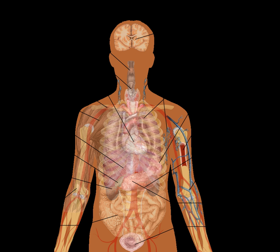Muscular system: movement with muscles. Nervous system: collecting, transferring and processing information with brain, spinal cord and nerves.